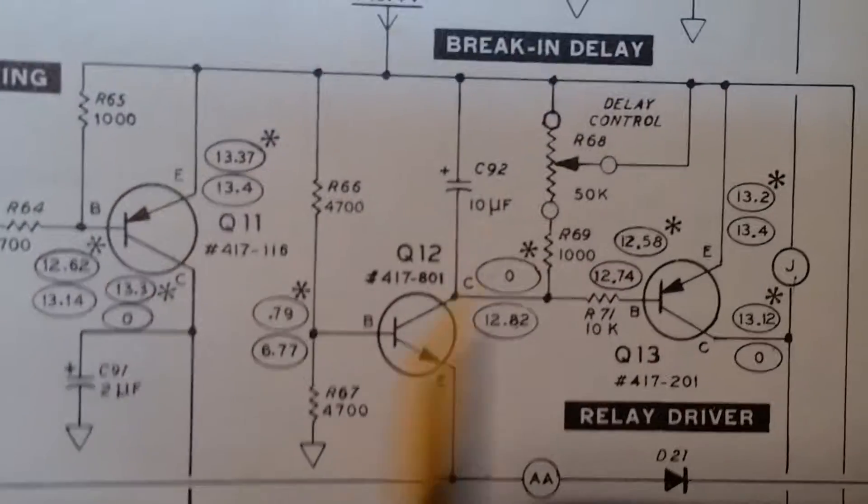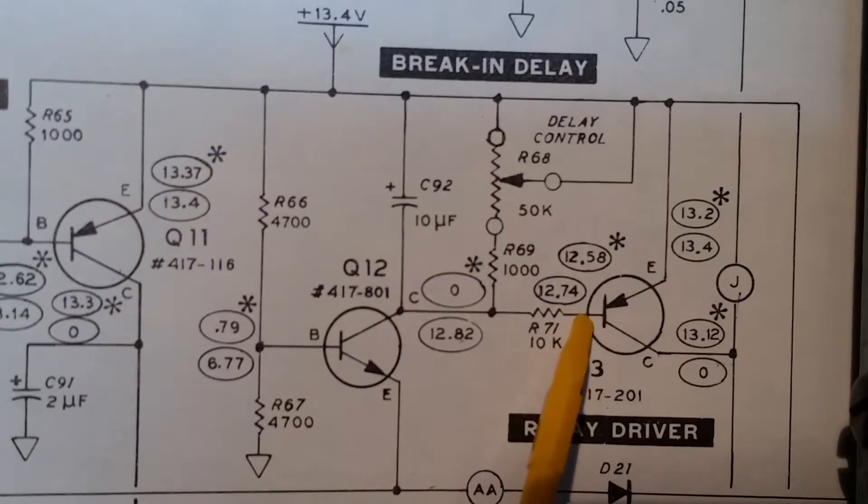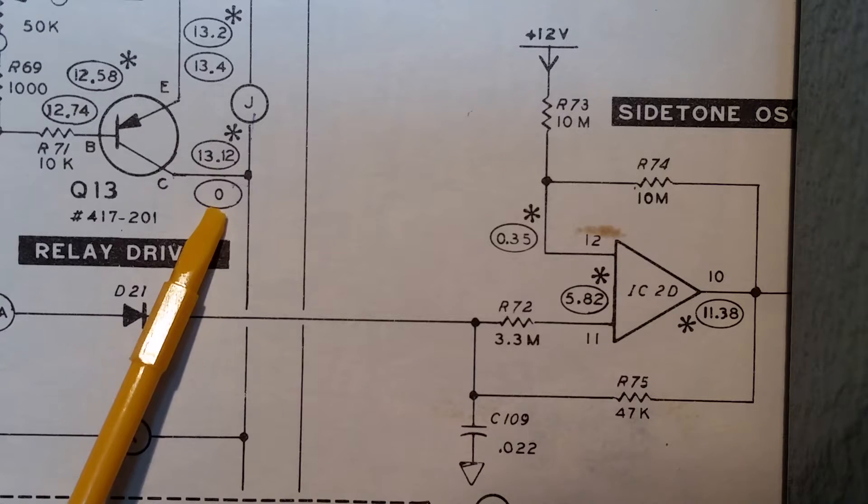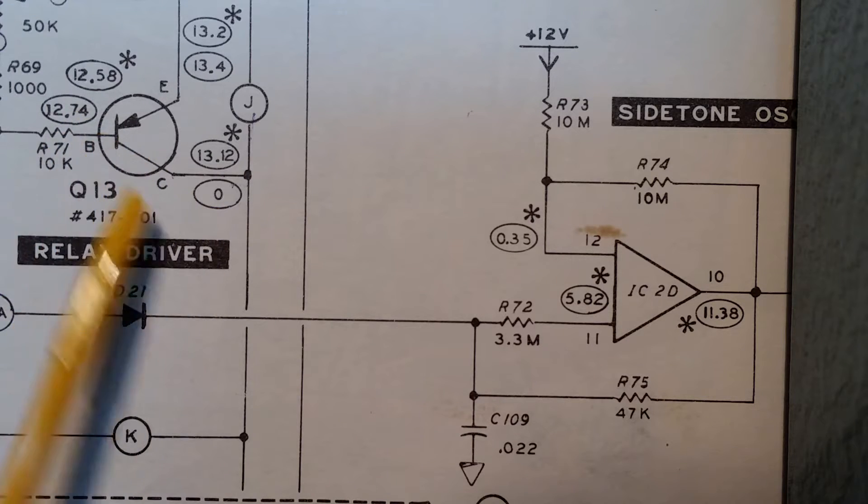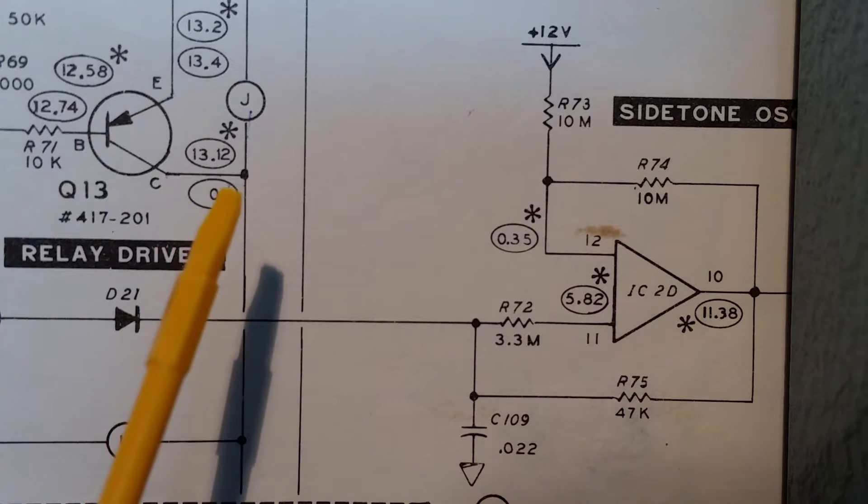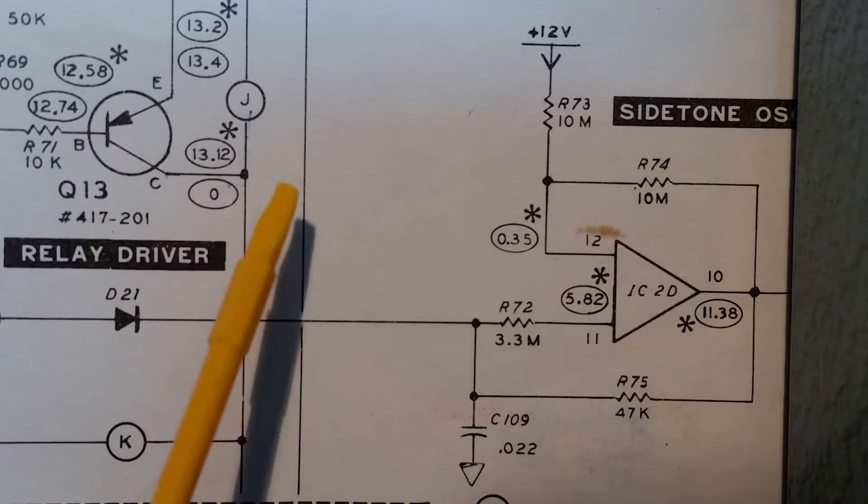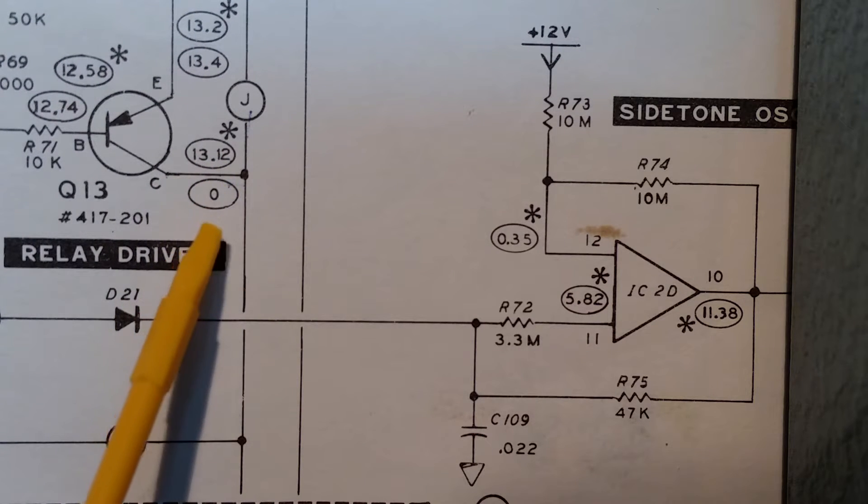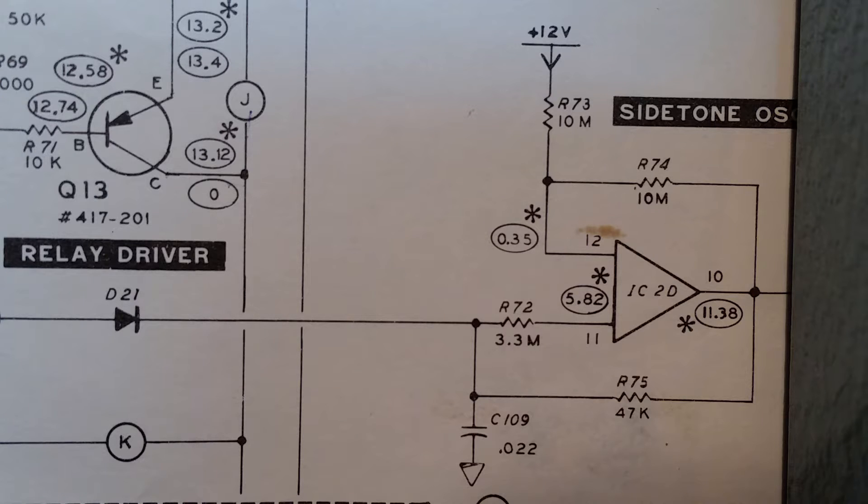Every voltage was correct here. The voltage here at Q13, all voltages again there. The collector goes to 13.12 volts when you key the transceiver. This voltage arrives at the coil of the relay.